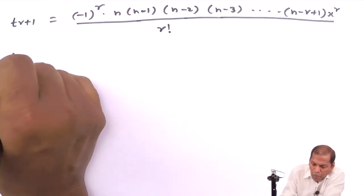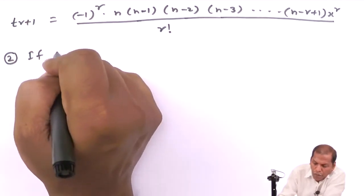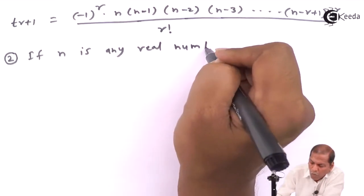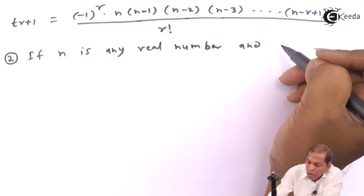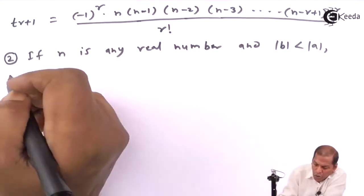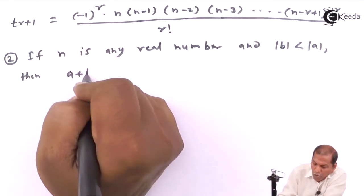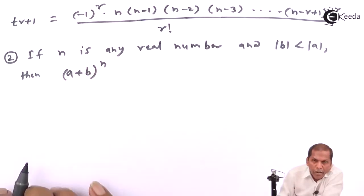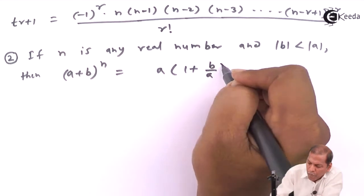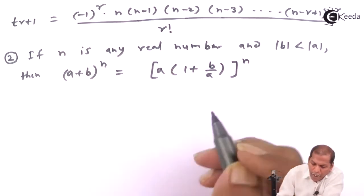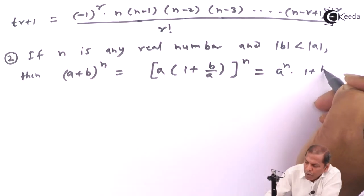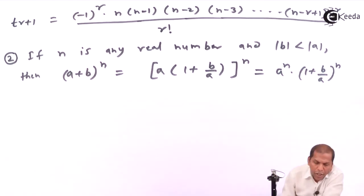Now we see Note 2. If n is any real number and |b| < |a|, then (a + b)^n can be written by taking a common: a^n · (1 + b/a)^n.